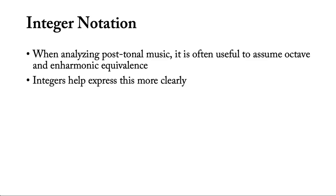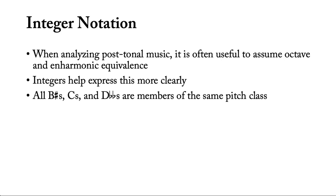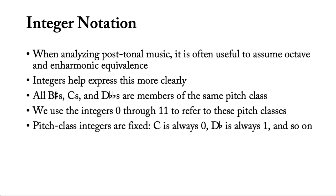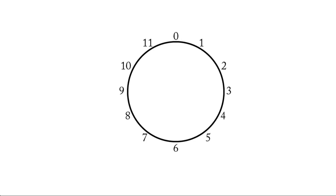For example, all B sharps, Cs, and D double flats are members of the same pitch class: pitch class 0. We use the integers 0 through 11 to refer to these pitch classes. A visual of all 12 pitch classes laid out on a circle of semitones can be helpful. Here we have the pitch class letter names, and when we add the enharmonic equivalence, they are better expressed as integers. When we lay out pitch class integers in this way, we often refer to it as a clock face diagram because it resembles a clock. Get used to drawing these, as they'll become very useful for helping to visualize some of the concepts in post-tonal analysis.